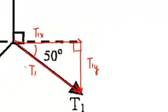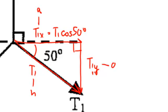Since T1 is the hypotenuse, and T1x is the adjacent side of this right triangle, this 50-degree angle, and T1y is the opposite side, then I could say that T1x is going to be equal to T1 times the cosine of 50 degrees. And likewise, T1y is going to be equal to T1 times the sine of 50 degrees.